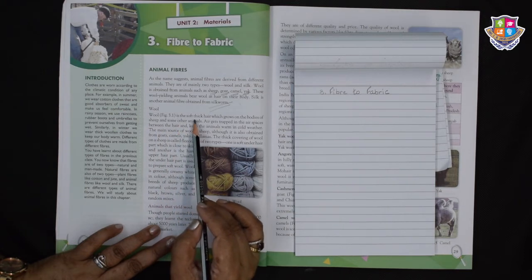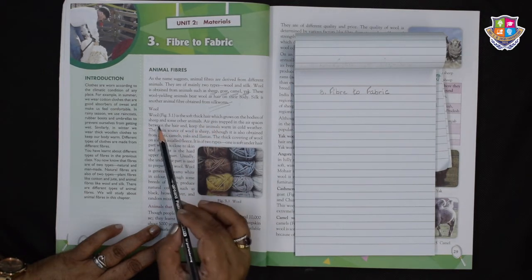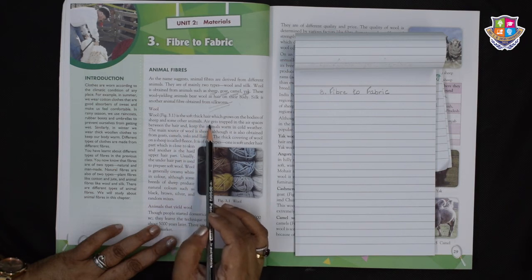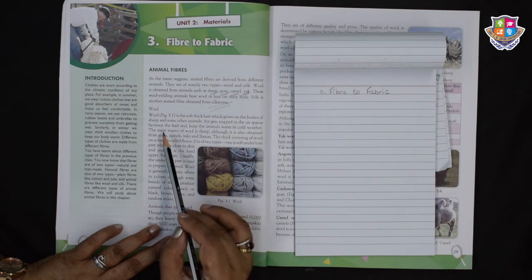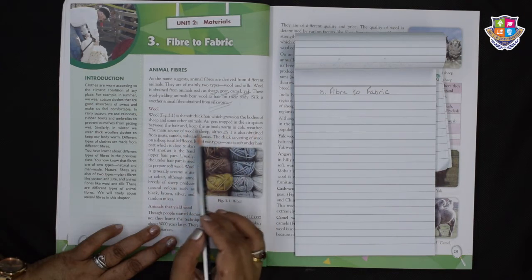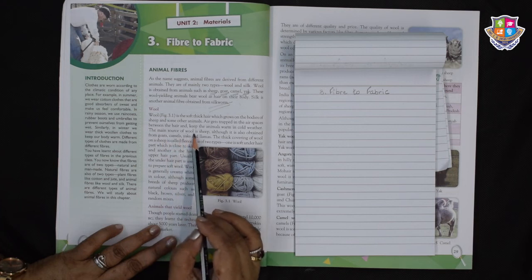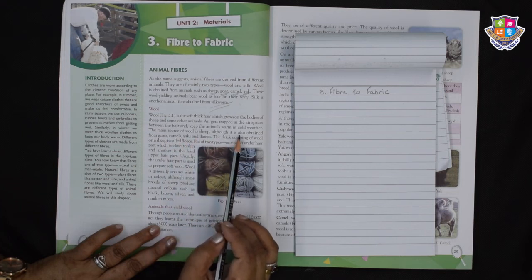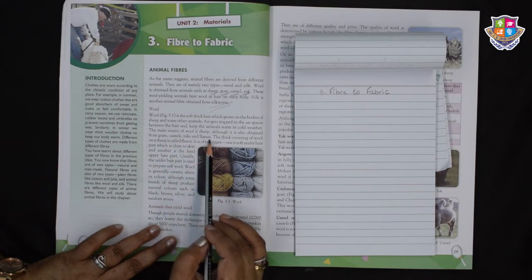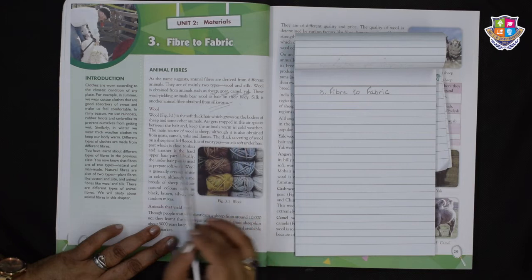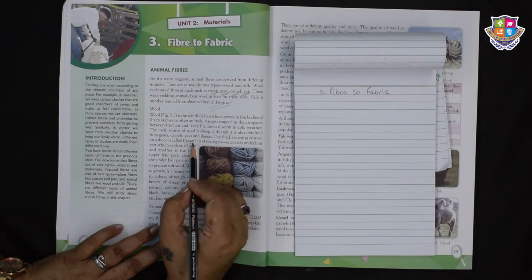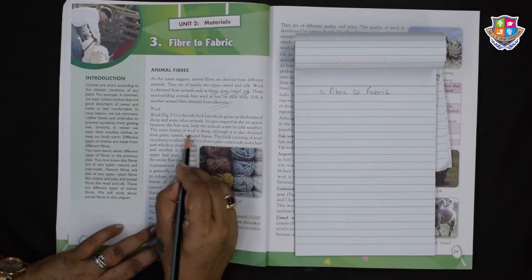Air gets trapped in the air spaces between the hair and keep the animals warm in cold weather. The main source of wool is sheep, although it is also obtained from goats, camels, yaks and llamas. The thick covering of wool on a sheep is called fleece. It is of two types.